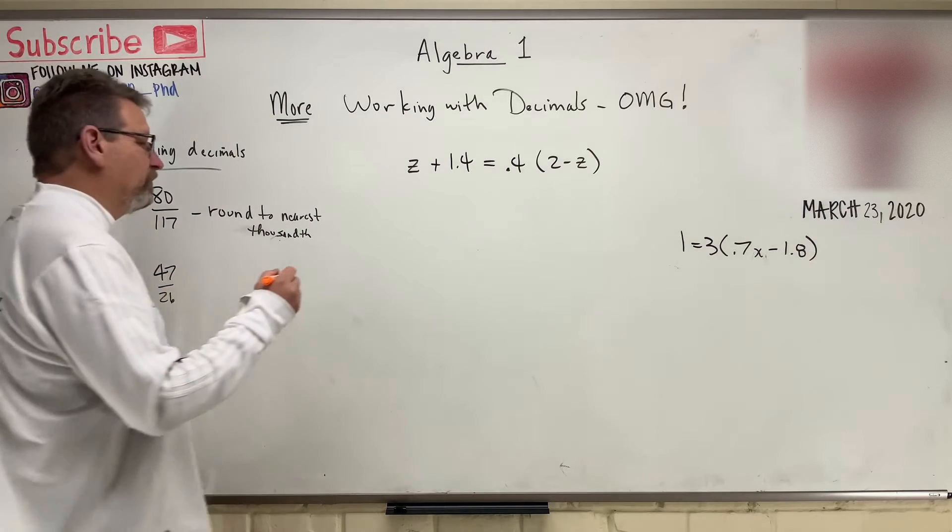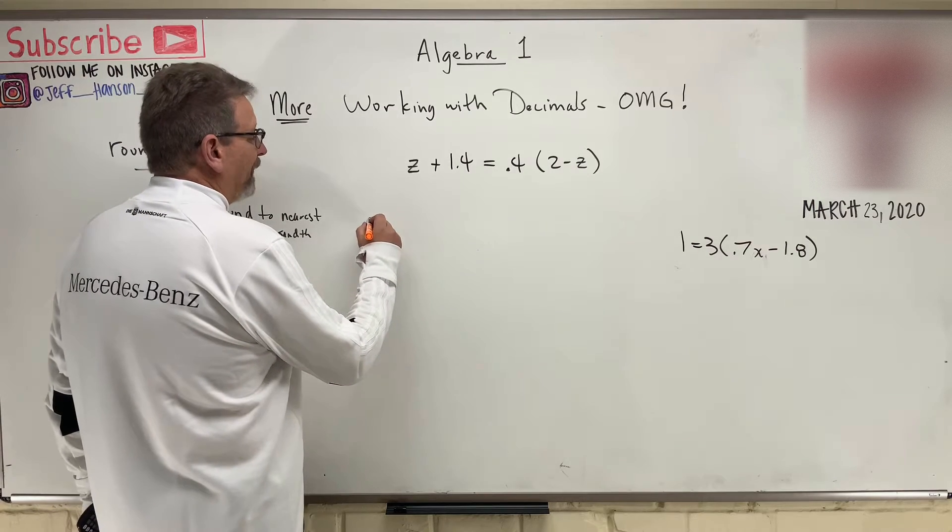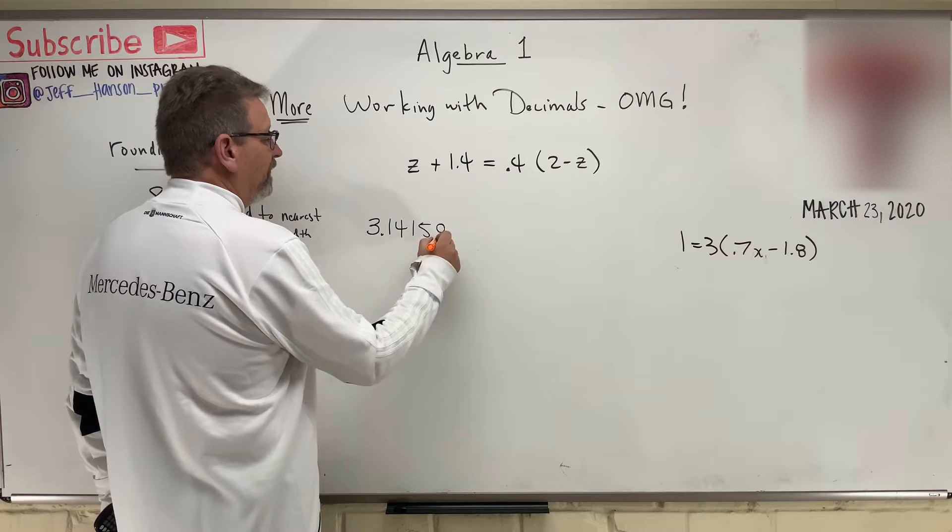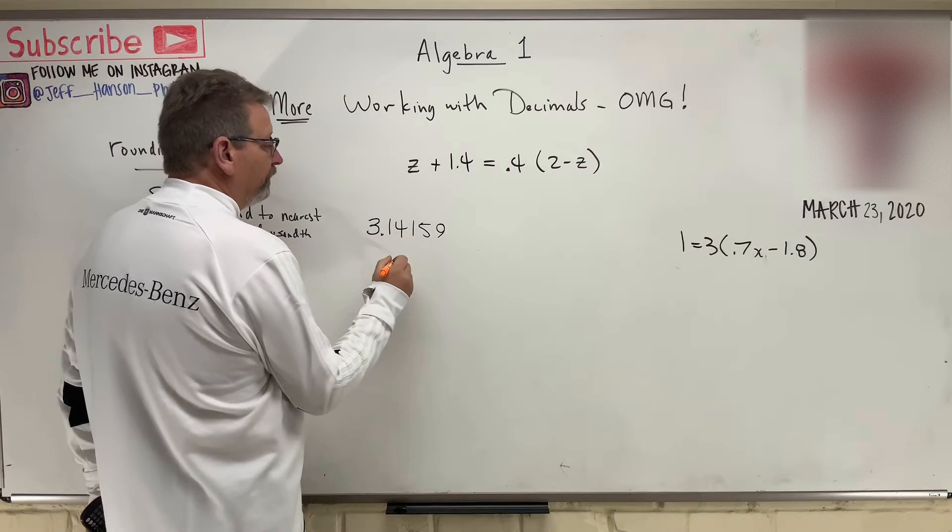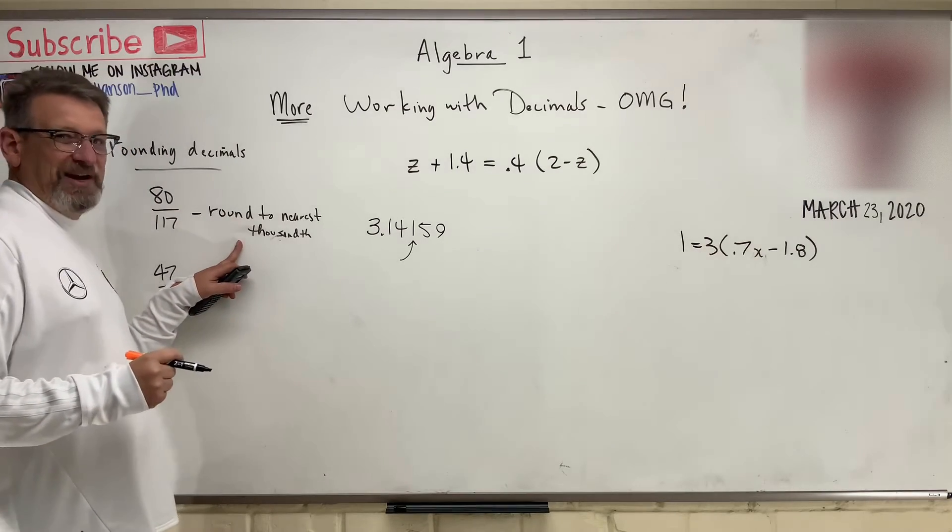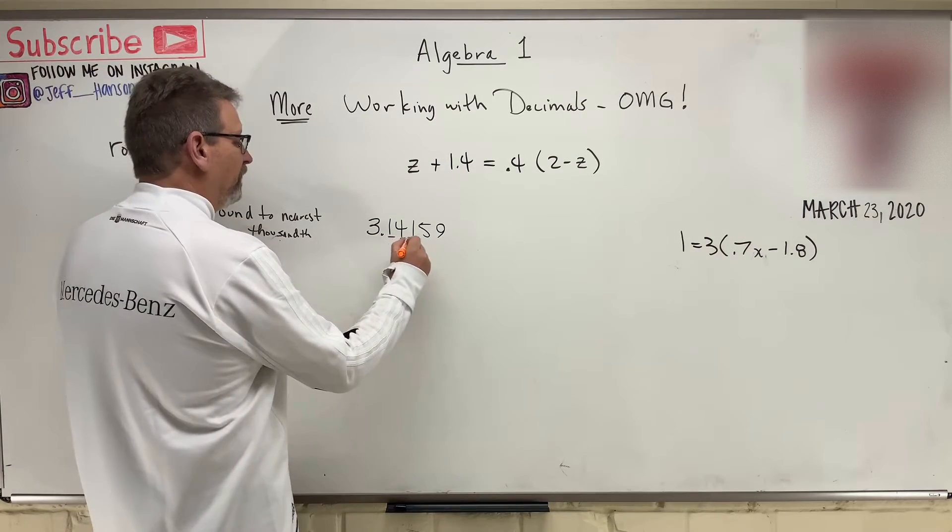So where was the thousandth place? Do you remember? If I have, remember we did pi, 3.14159, and tens, hundreds, thousands. This is thousands. So round to the nearest thousandth means three decimal places, tens, hundreds, thousands.